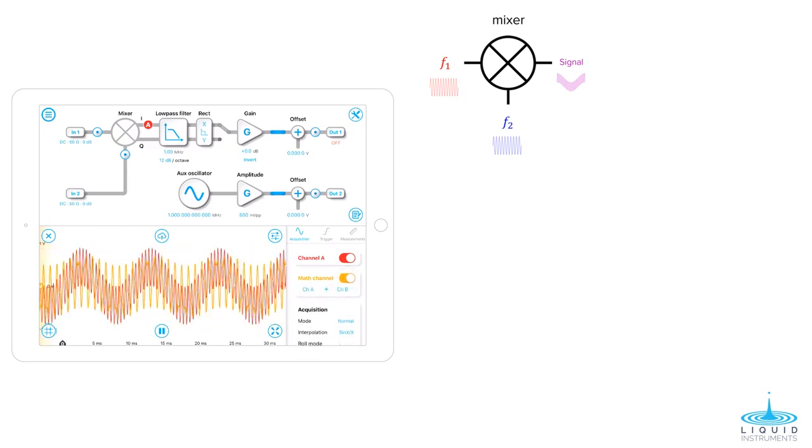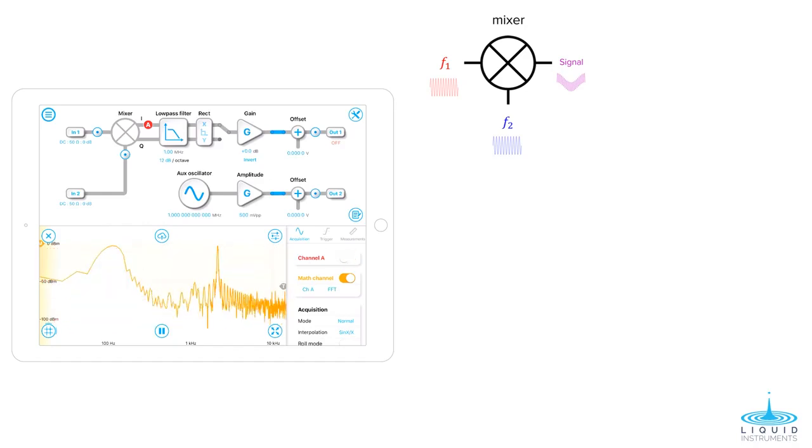By turning on the FFT feature and viewing the signal in the frequency domain, we observe two peaks at around 100Hz and 2.1kHz, which is as we would expect, a signal at the sum and a signal at the difference of the two inputs.